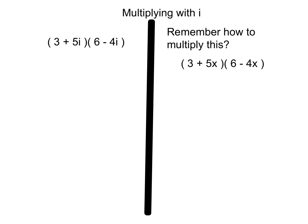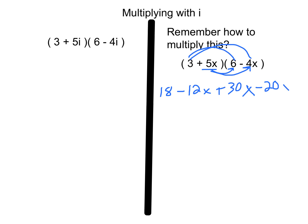So I'm going to just tor attack, or foil: 6 times 3 is 18, 3 times negative 4x is negative 12x, 5x times 6 is plus 30x, and 5x times negative 4x is negative 20x squared. Then from there, we combined our like terms, putting this all together: 18 plus 18x minus 20x squared. And we were done.